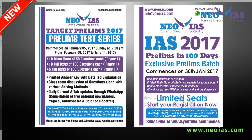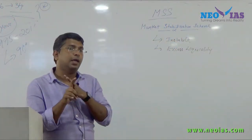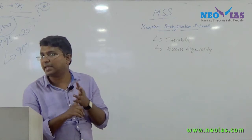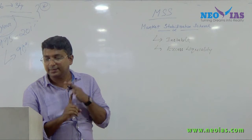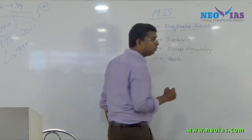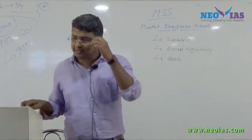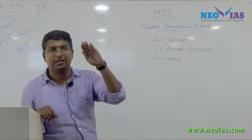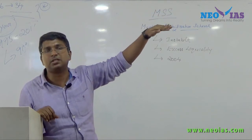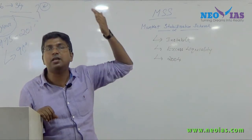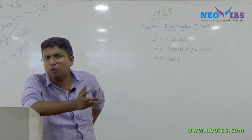Market Stabilization Scheme is basically performed by Reserve Bank of India to absorb excess liquidity. This was first used way back in 2004, when there was excess liquidity due to inflow of foreign currency. That was the first time MSS was used by the Reserve Bank of India.